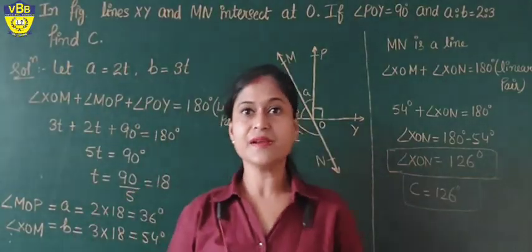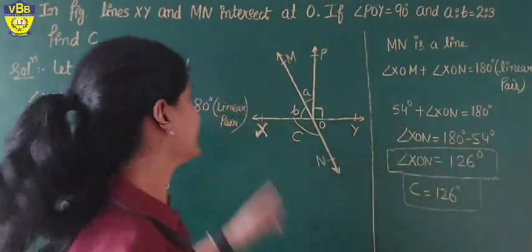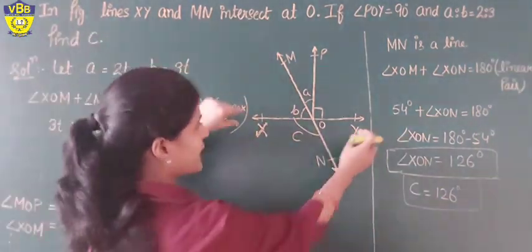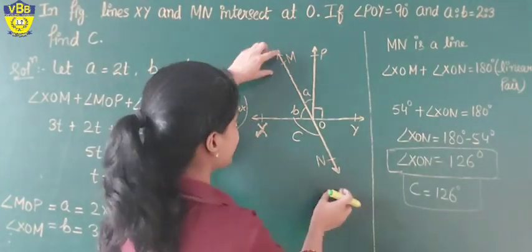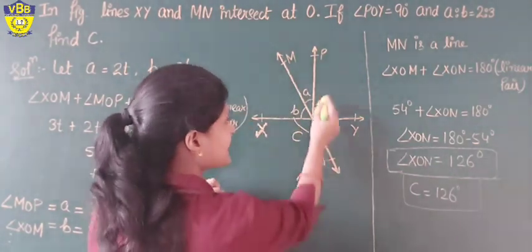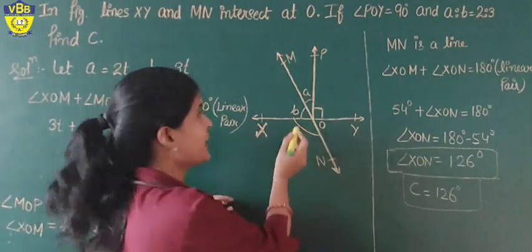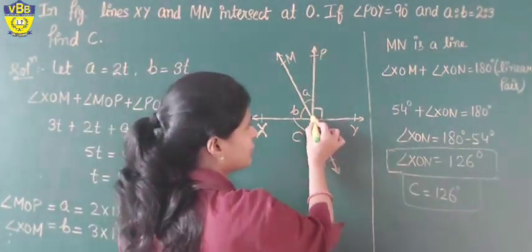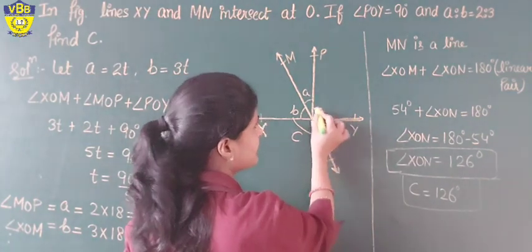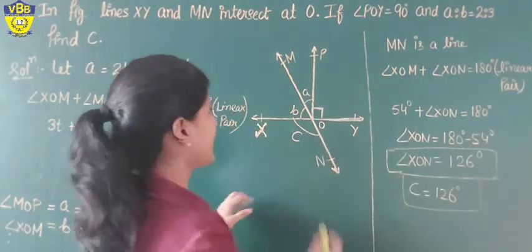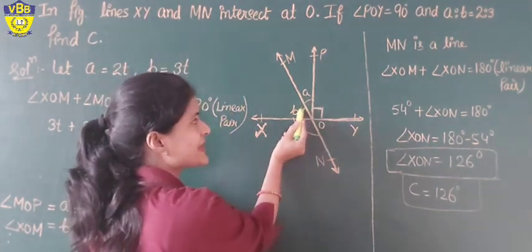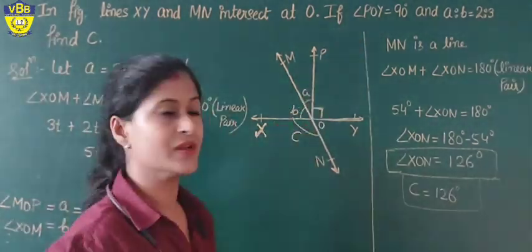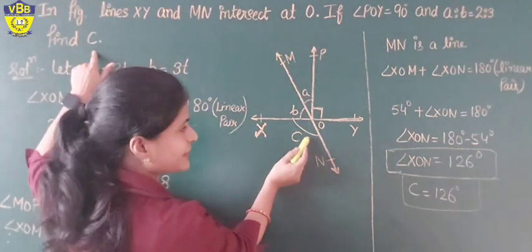Next question: in the figure, line XY and MN intersect each other at point O. Angle POY is 93 degrees. Angles A and B are in the ratio 2:3. Find the value of angle C.